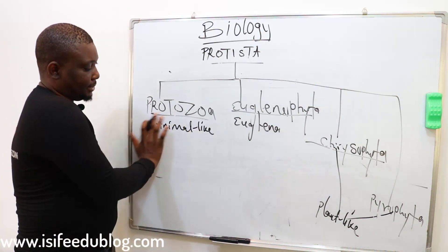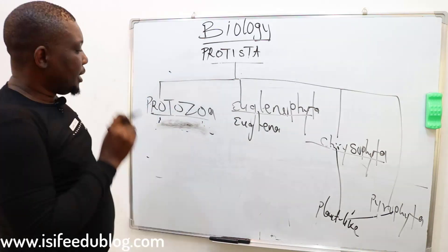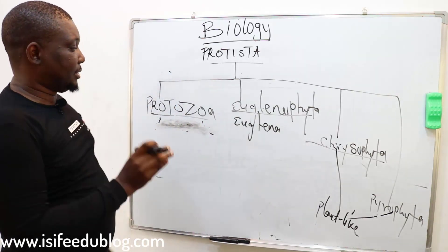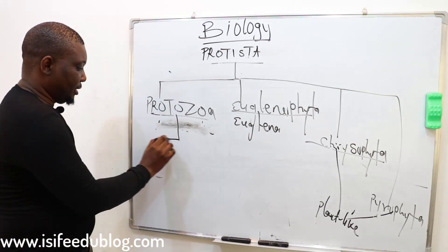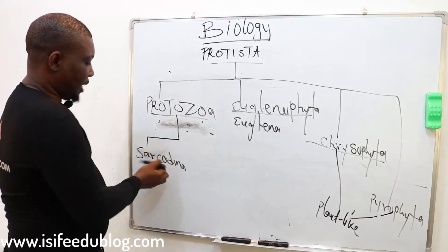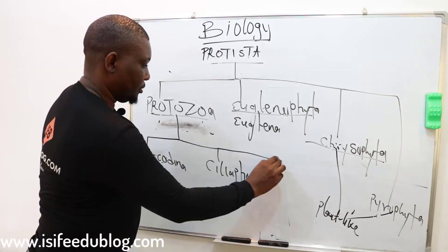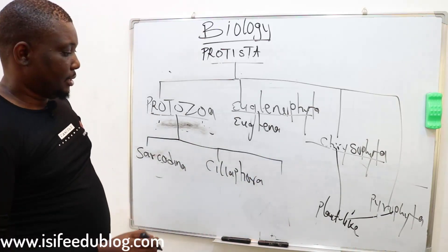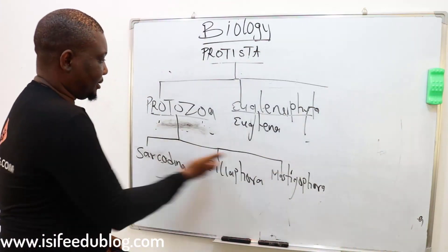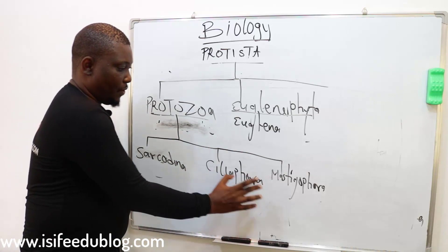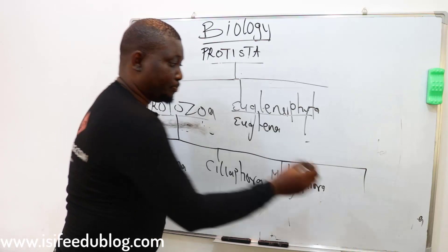Before we do that, phylum Protozoa is further split into about four classes, namely: Sarcodina, Ciliata or Ciliophora, Mastigophora, and the last but not the least, Sporozoa.